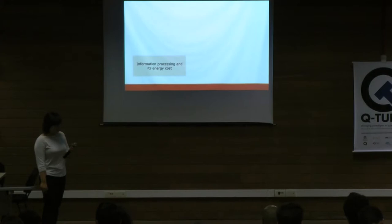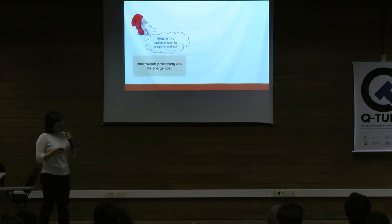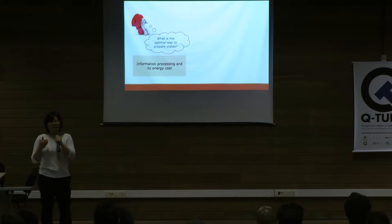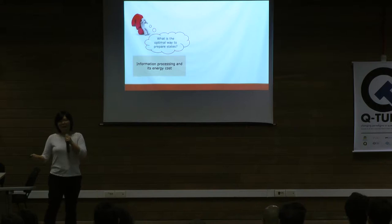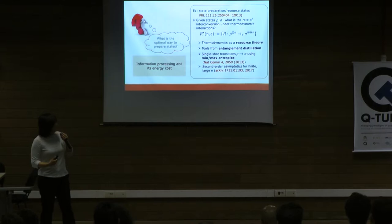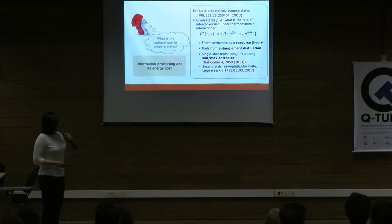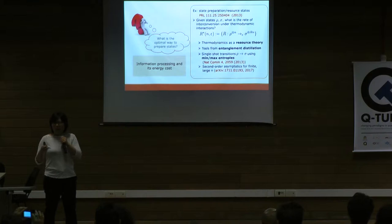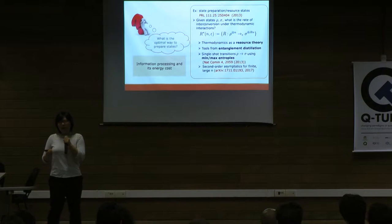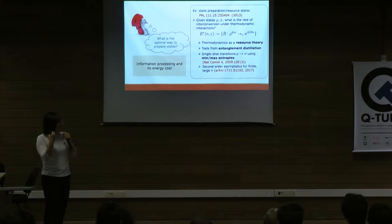Motivated by data processing questions, many problems can also be stated as questions of state preparation: given n copies of some initial state, I want to achieve some target state rho prime, and the question is what is the optimal rate of conversion via thermodynamical rules. This is where the resource theory approach for thermodynamics comes in. Because it has a very similar structure to the resource theory of entanglement, we see many results from entanglement distillation and second-order asymptotics that also find significance in quantum thermodynamics, not just information theory.